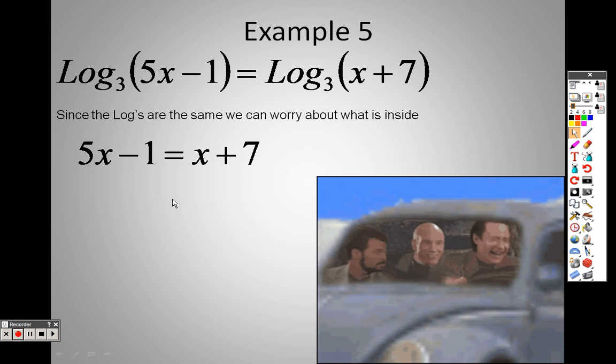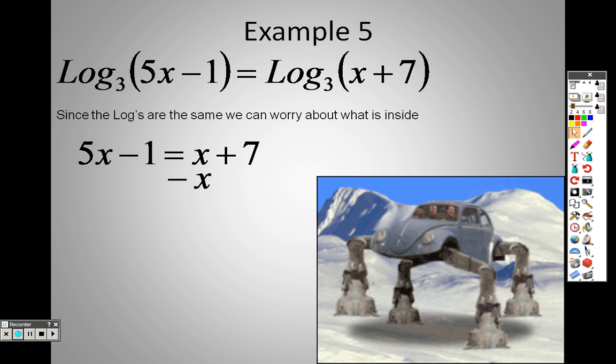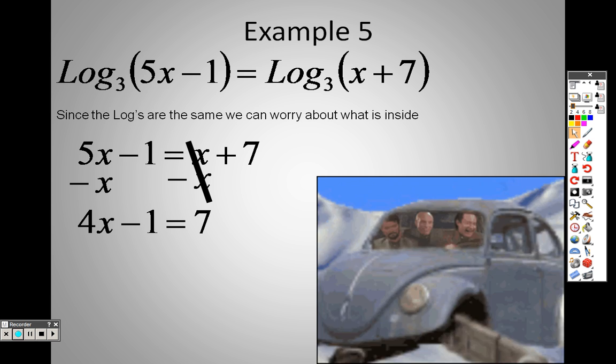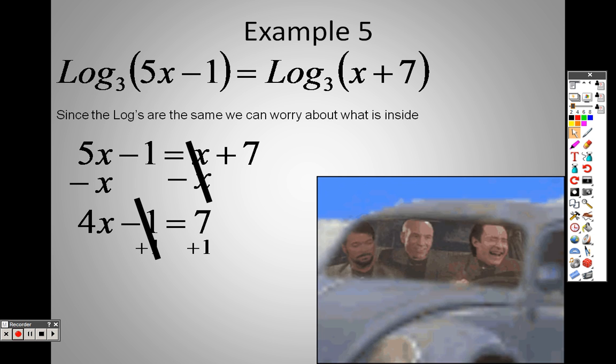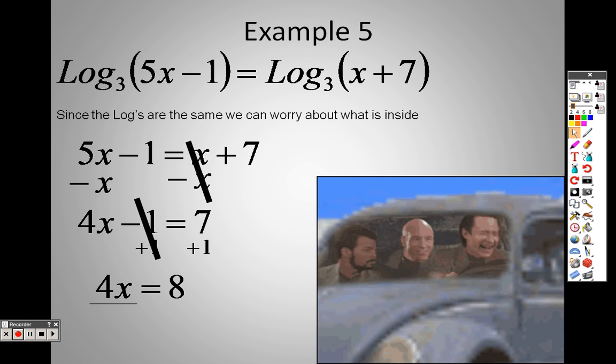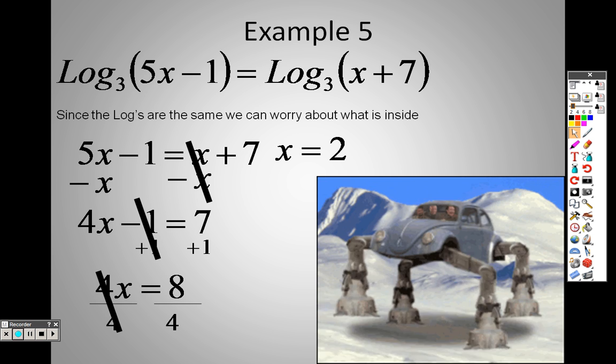So basically all I have to do is do 5x minus 1 equals x plus 7. So to do that, I combine the x's on both sides to get 4x minus 1 equals 7. I add 1 to both sides to get 4x equals 8, and I can divide both sides by 4 and get x equals 2 as my answer.